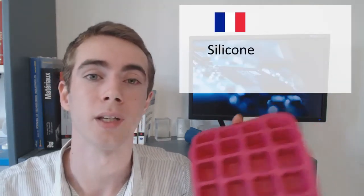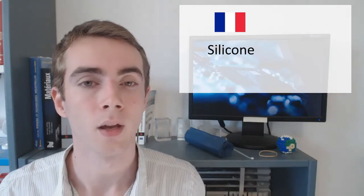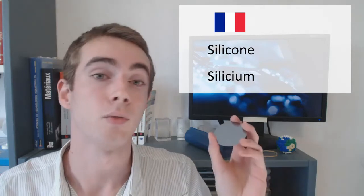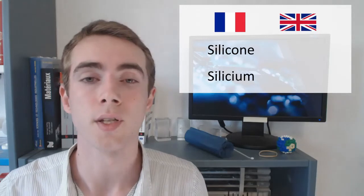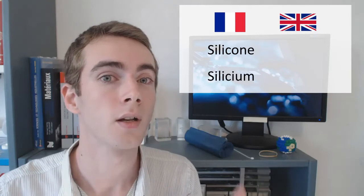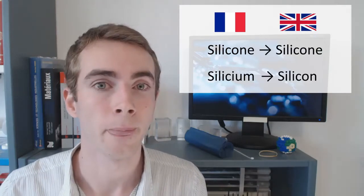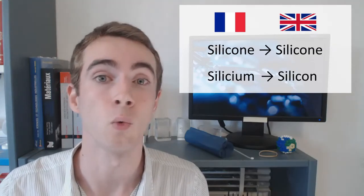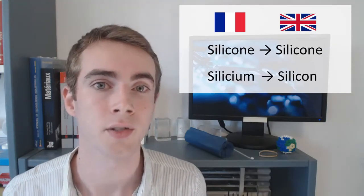D'ailleurs, j'en profite pour faire une petite parenthèse linguistique sur une erreur de traduction que j'entends un peu trop souvent. Dans le langage courant, la silicone, c'est l'élastomère qui sert par exemple à fabriquer les moules à gâteaux ou les moules à glaçons. Le silicium, quant à lui, c'est le quatorzième élément de la classification périodique et c'est surtout la base de nos microprocesseurs. Nos amis anglophones ont eu la bonne idée de nommer le silicium et les silicones « silicon » et « silicone ». Donc, attention quand vous traduisez de l'anglais vers le français à vérifier si le « e » est présent ou pas, parce qu'il y a quand même une petite différence entre ces deux matériaux.